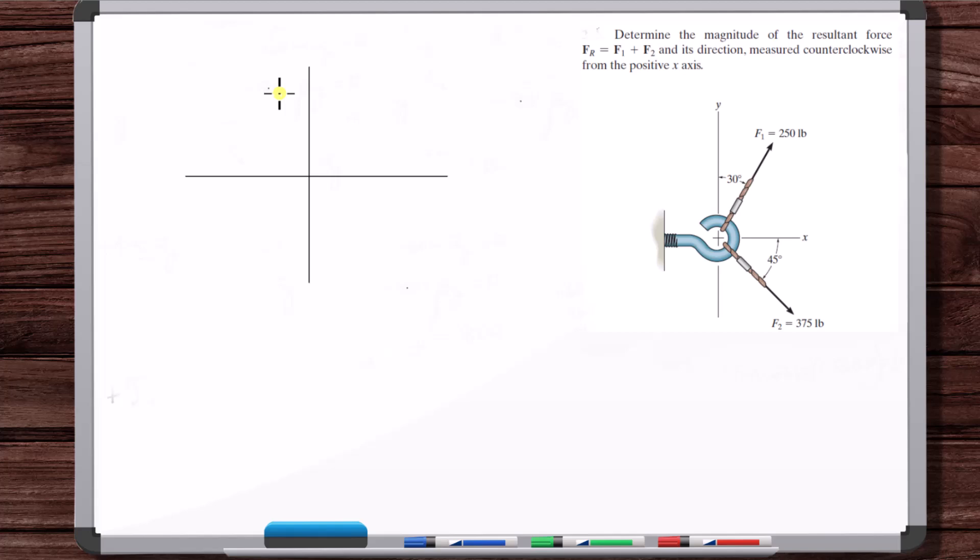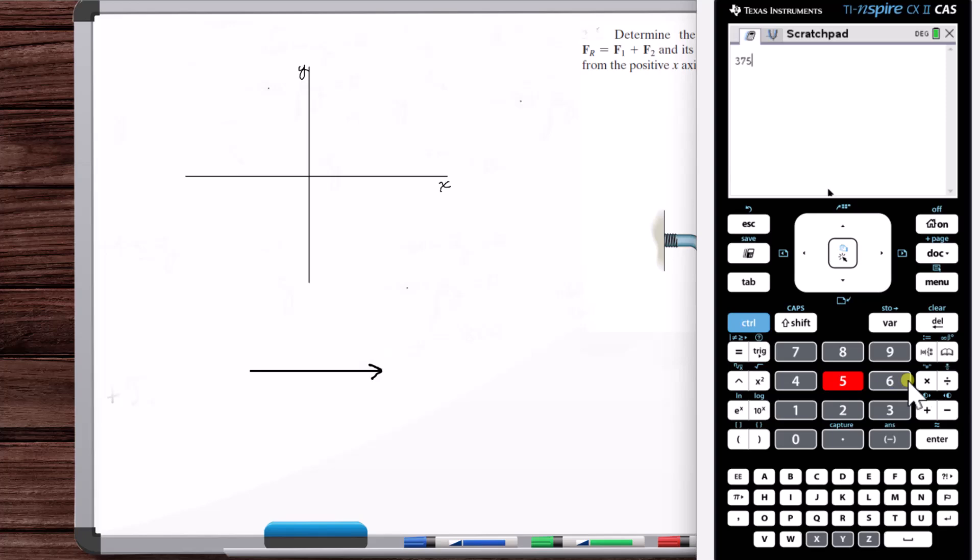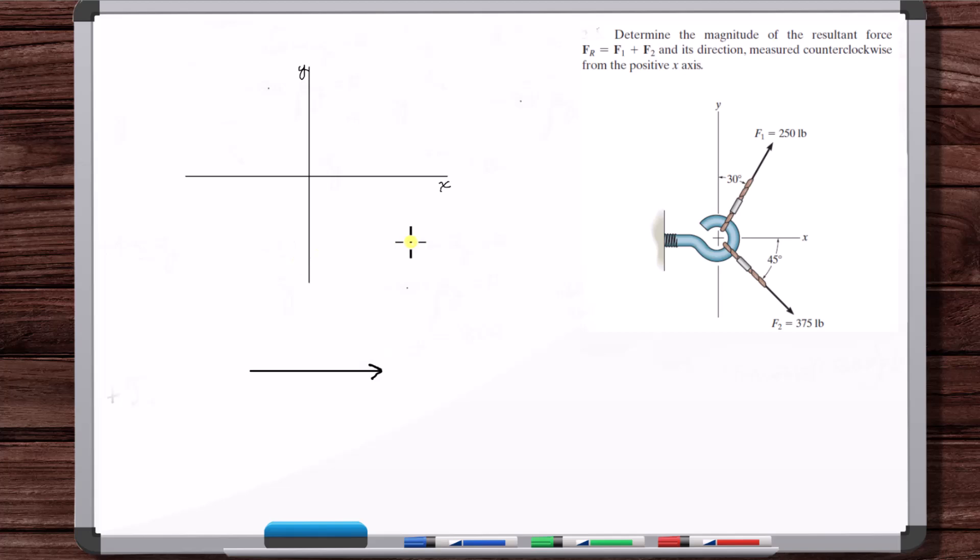There's your x and y. Now to draw F1 and F2, it's helpful to draw them to scale, at least the relative length of them to scale. If this is F1, then F2 is going to be, what is 375 divided by 250? Three halves, so one and a half times longer. So it's the length of that vector plus a half of its length, kind of like that.